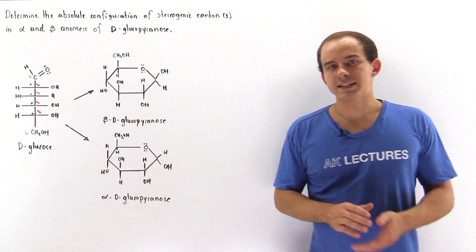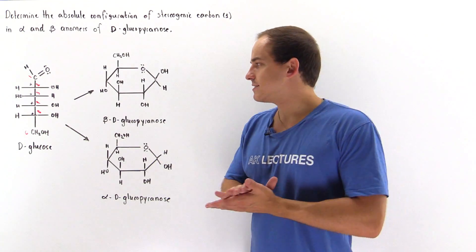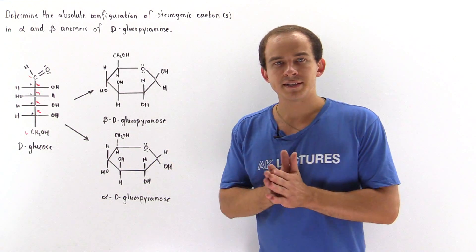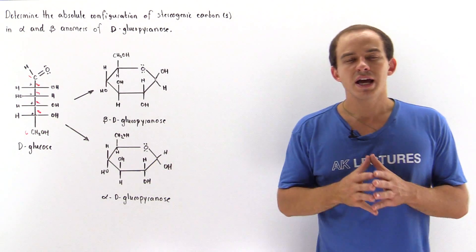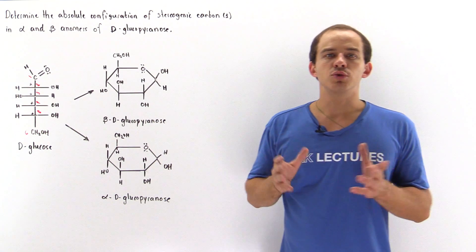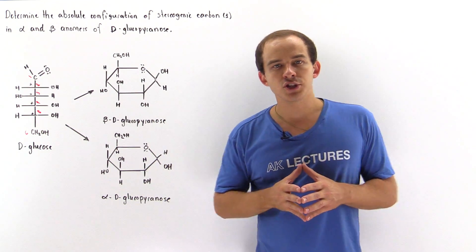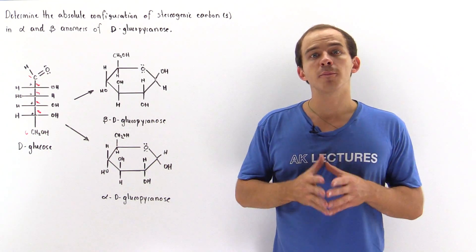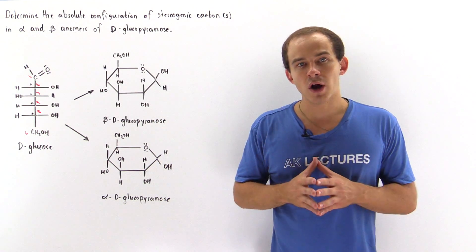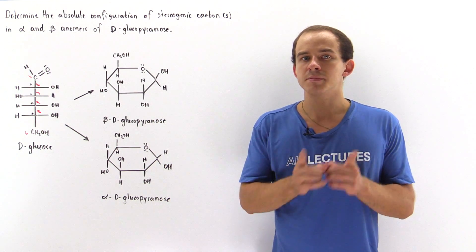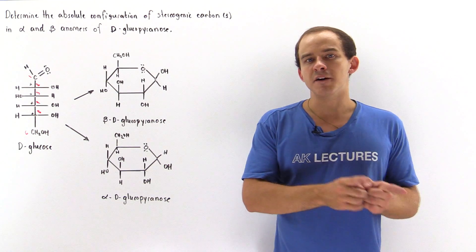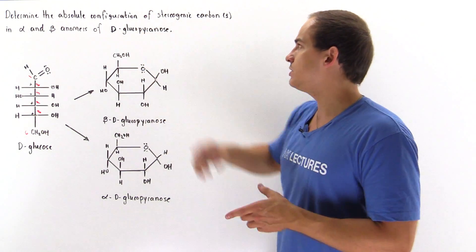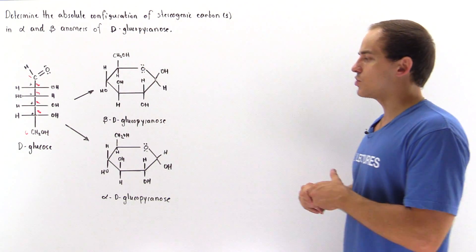Let's take a look at the following example in which our goal is to determine the absolute configuration of the new stereogenic carbon, carbon number one, that is formed in the alpha and beta anomers of D-glucopyranose.